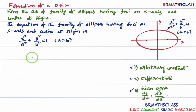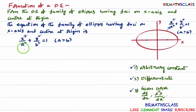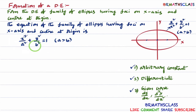Now observe this equation. How many arbitrary constants are there? We know that generally a and b represent constants. Here a is a constant but we don't know exactly what a is, so a is known as an arbitrary constant. Similarly, b is also an arbitrary constant. What about the 2? Two is a fixed constant, not an arbitrary constant. So we have identified two arbitrary constants present in this equation, and our main intention is to eliminate those two. As there are two arbitrary constants, we will differentiate this two times.